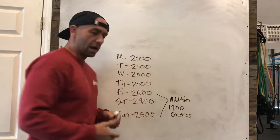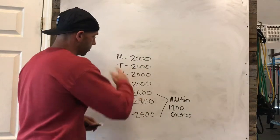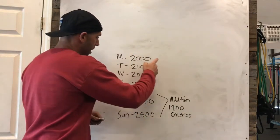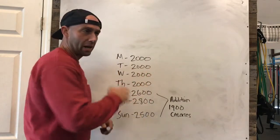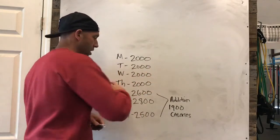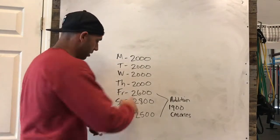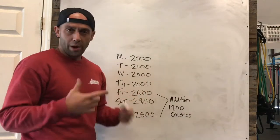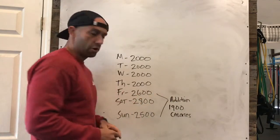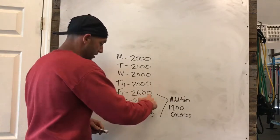So let's say Monday you're great, 2,000 calories. Tuesday, 2,000 calories. Wednesday, 2,000 calories. Thursday, 2,000 calories. And then the weekend starts. Friday you go out to eat, have some dinner, have some drinks with some friends, and you're eating 600 more calories than you're supposed to.